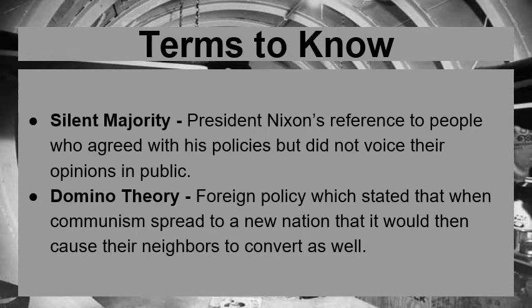Because we have secret ballots in this country, people might not vote the same way they voice their opinion. Domino theory — a foreign policy which stated that when communism spread to a new nation, it would cause their neighbors to convert as well. This was a big fear in Eastern Europe, Asia, and Latin America, because in many poor countries people are desperate, and socialism or communism seems like a likely candidate. Some places had violent revolutions funded by foreign nations, and we'll talk about the CIA's involvement as well.